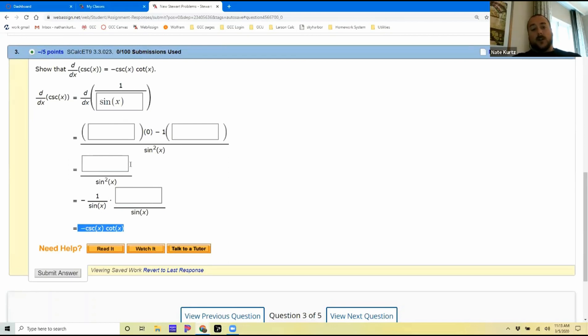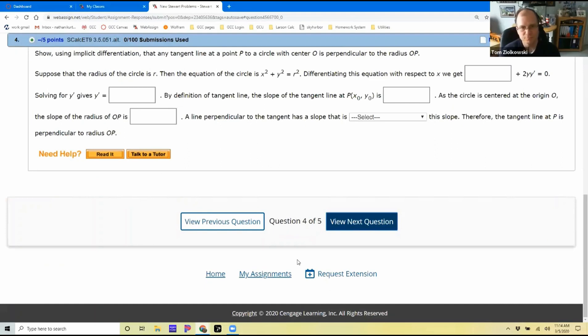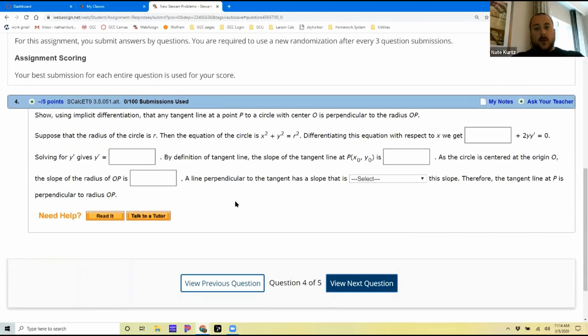I get to see the students' thought process and see them working through the problem. Let's go to another type of problem. Now we are starting to get into implicit differentiation. You're talking about the tangent line at a point of a circle with center of zero.